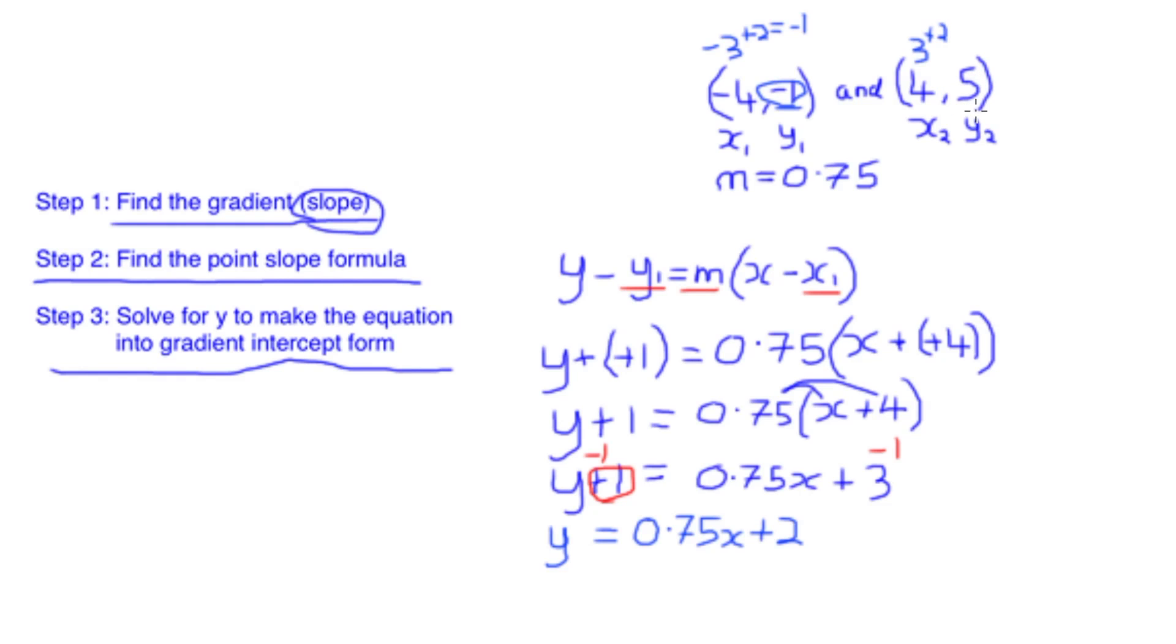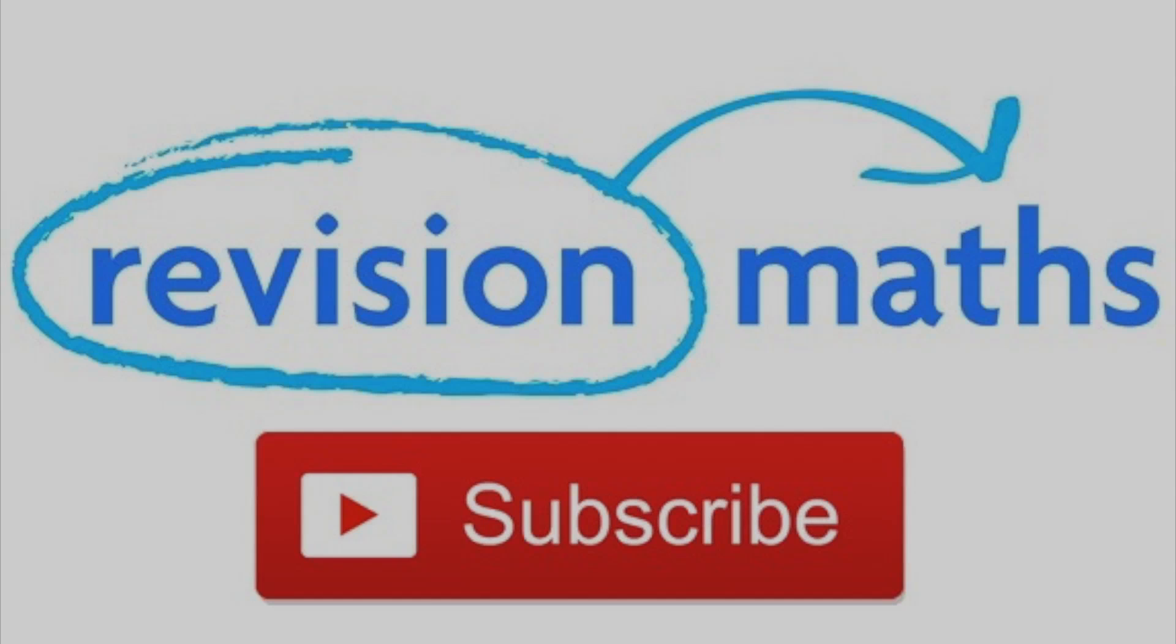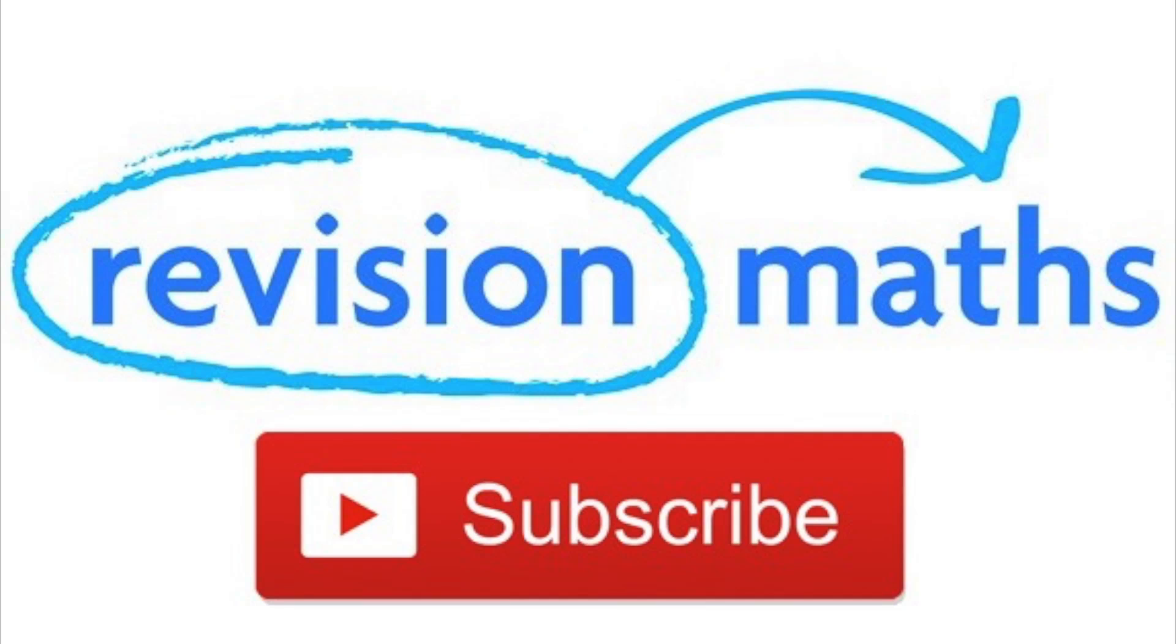So first we found the gradient or slope, second we found the point slope formula and used it with the values that we did know, and finally we solved for y to make the equation into gradient intercept form. Thanks for watching, and as ever, subscribe to the channel and like for more videos, or go to visionmaths.com for more materials.